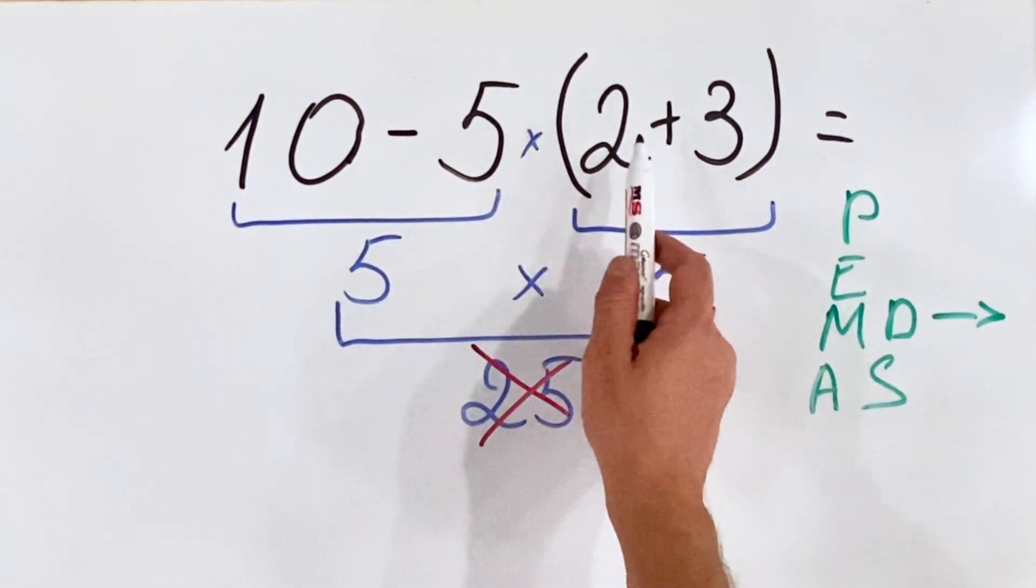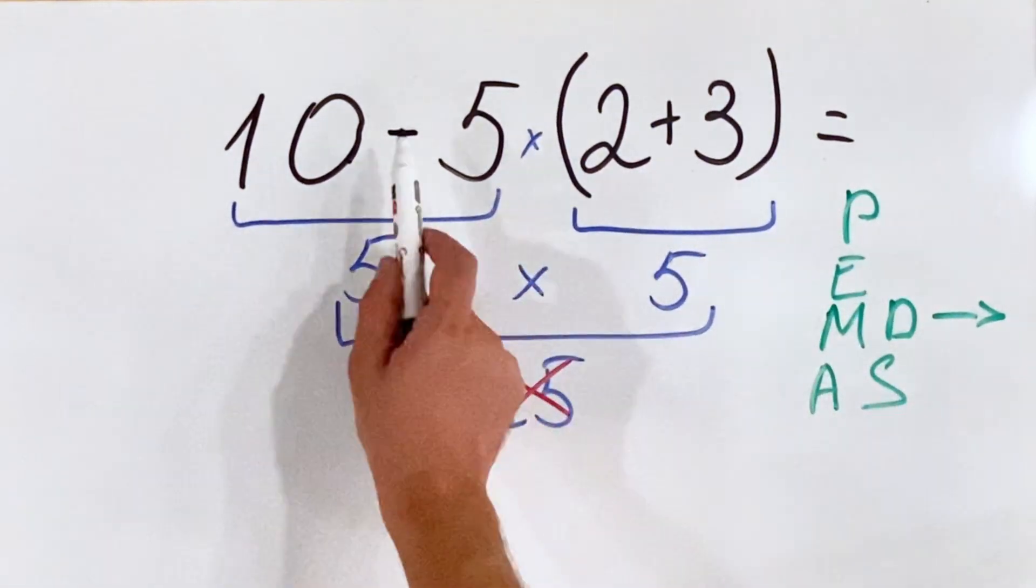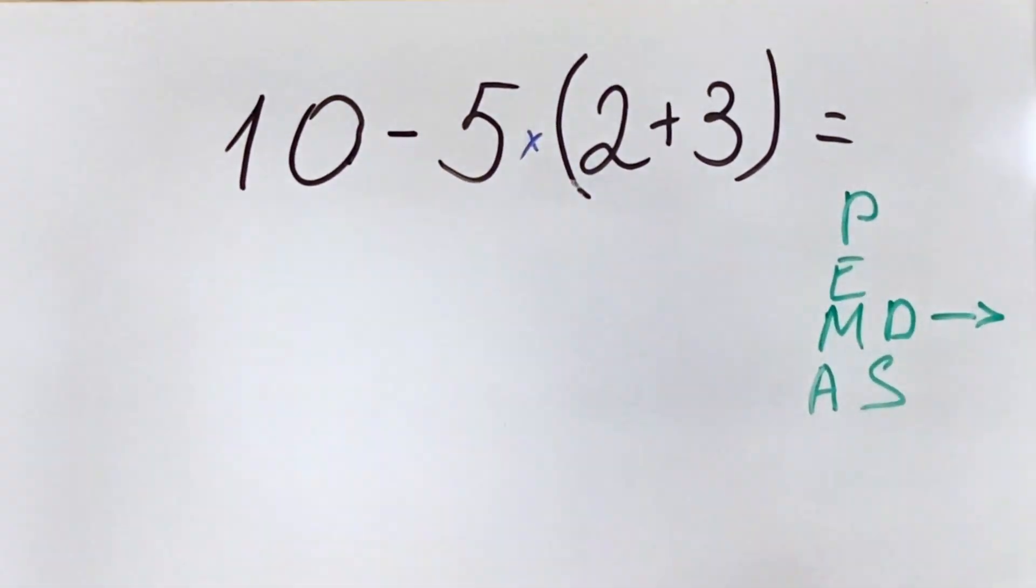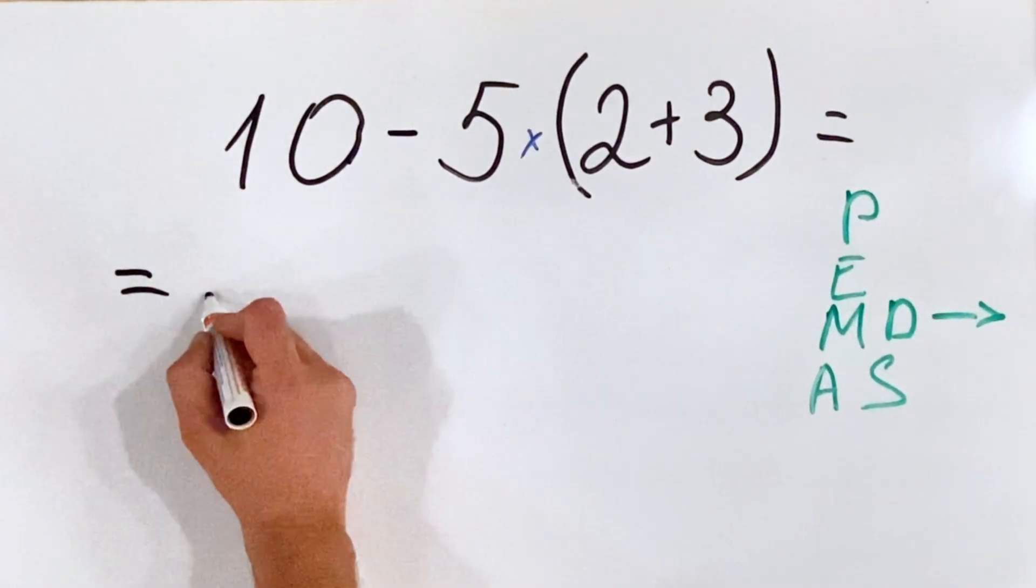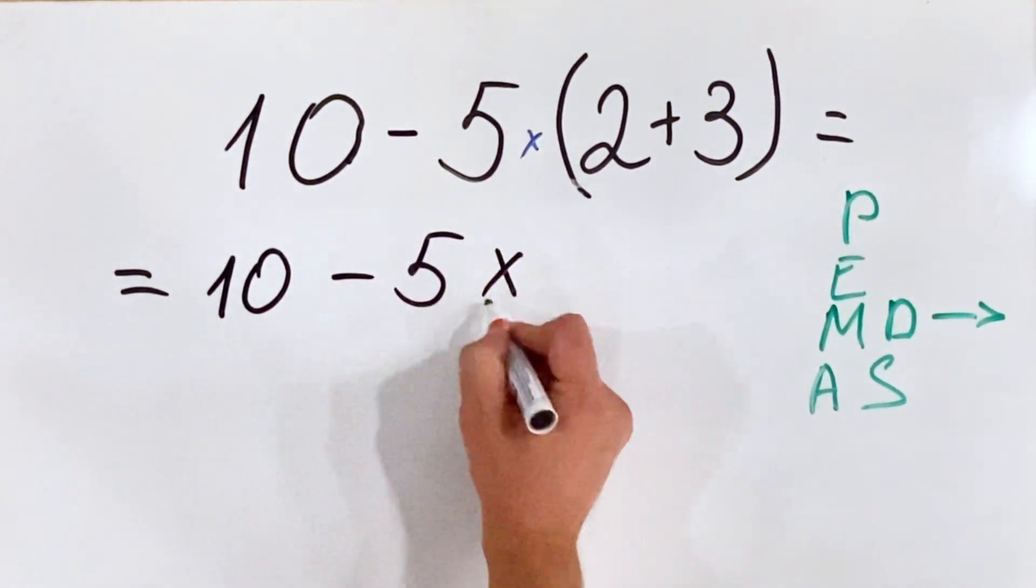In our case, we have parenthesis, which must be done first, and we have multiplication and subtraction. So first we do the parenthesis, and we have 10 minus 5 multiplied by 5.